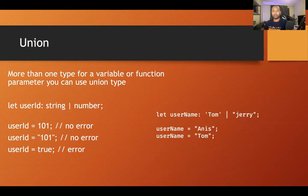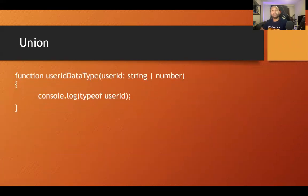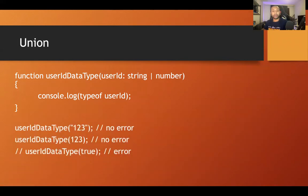You can even use union with specific literal values, like 'let username: "tom" | "jerry"'. Then username can only be assigned 'tom' or 'jerry' — nothing else. So 'username = "anis"' is invalid, but 'username = "tom"' is perfectly valid. You can also use union types in function parameters, combining string, number, boolean, or whatever types you need.